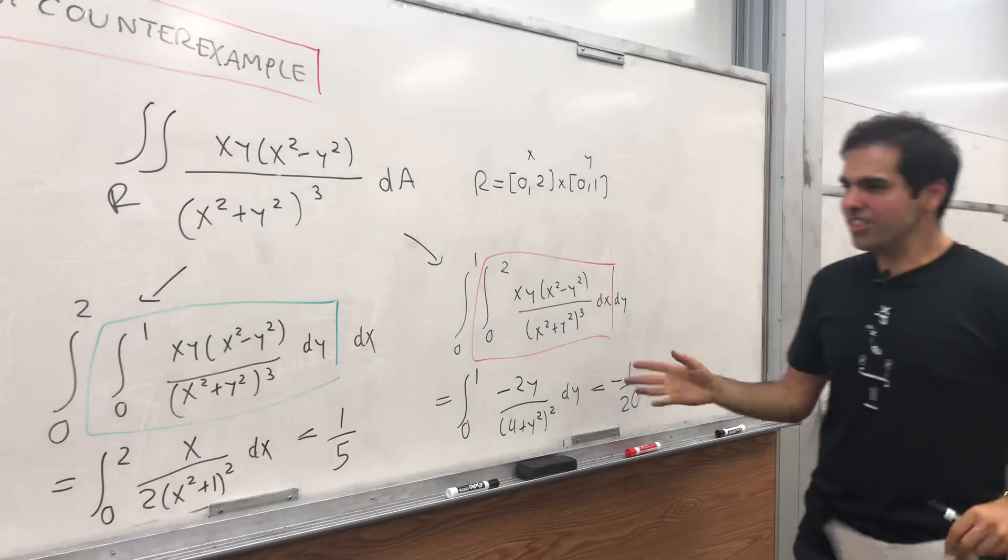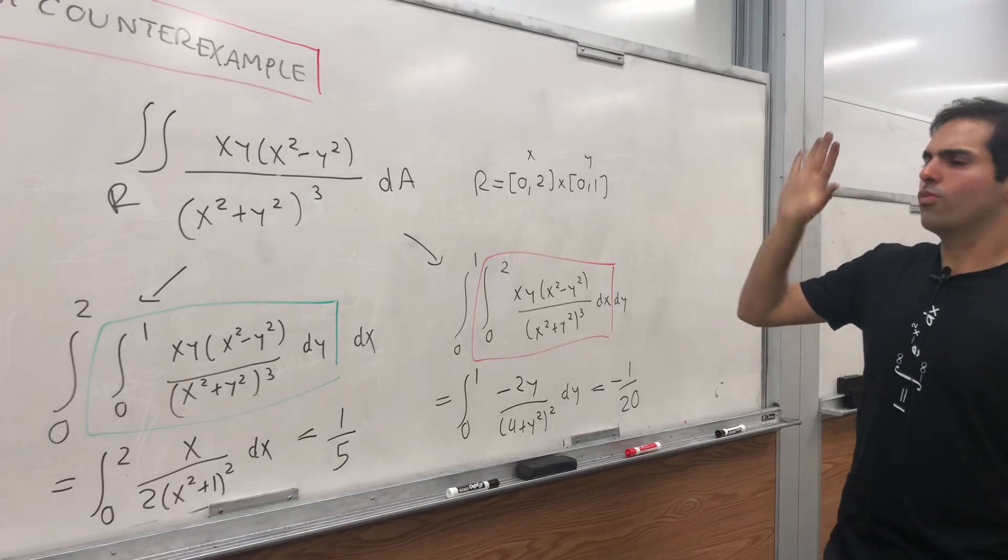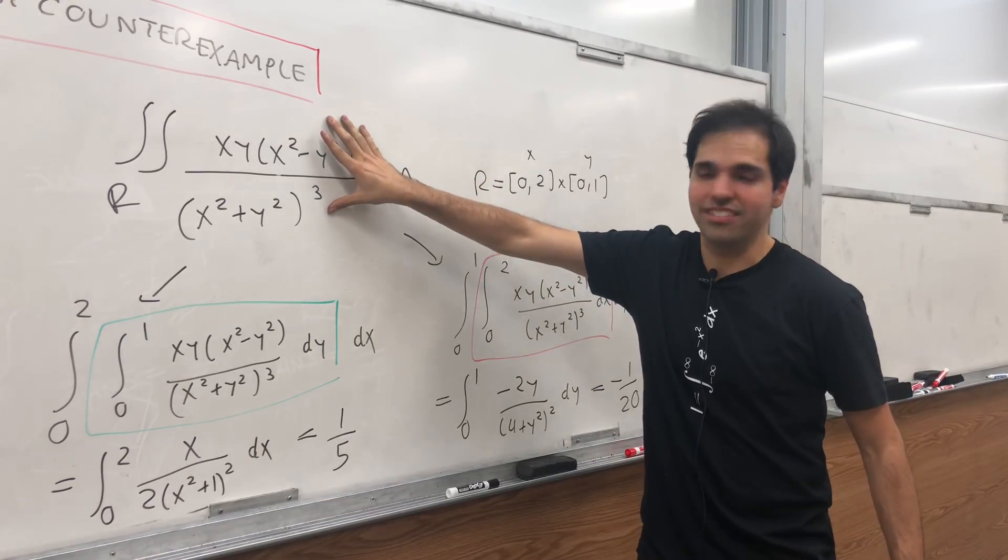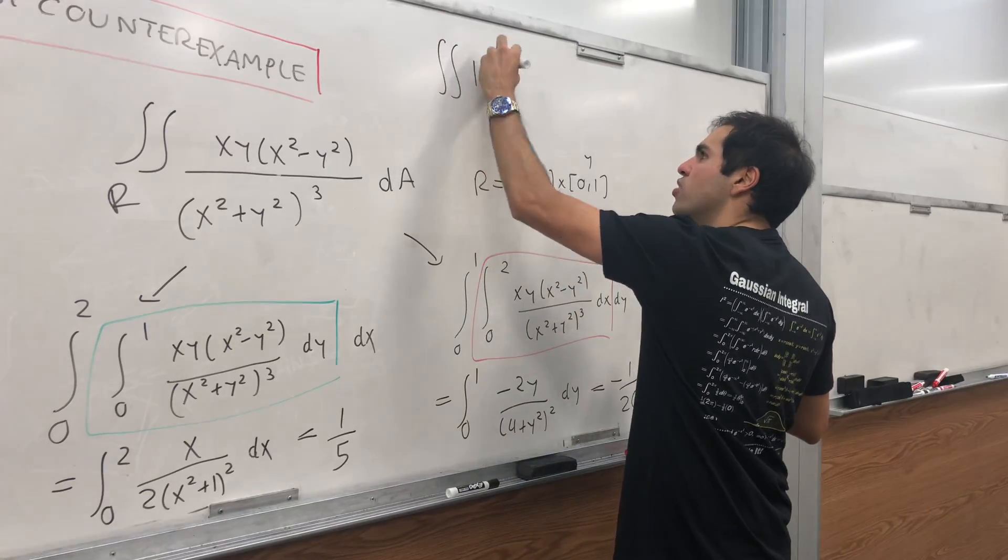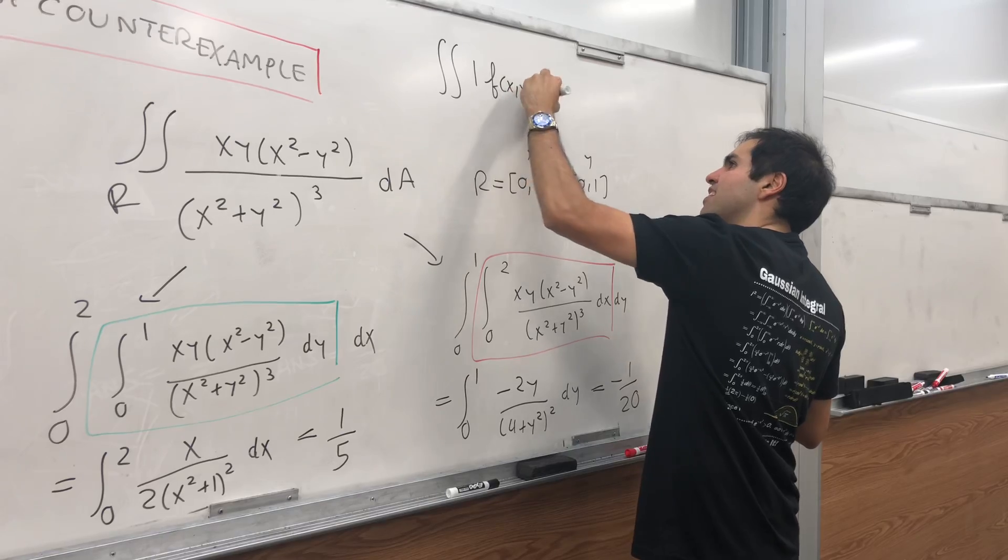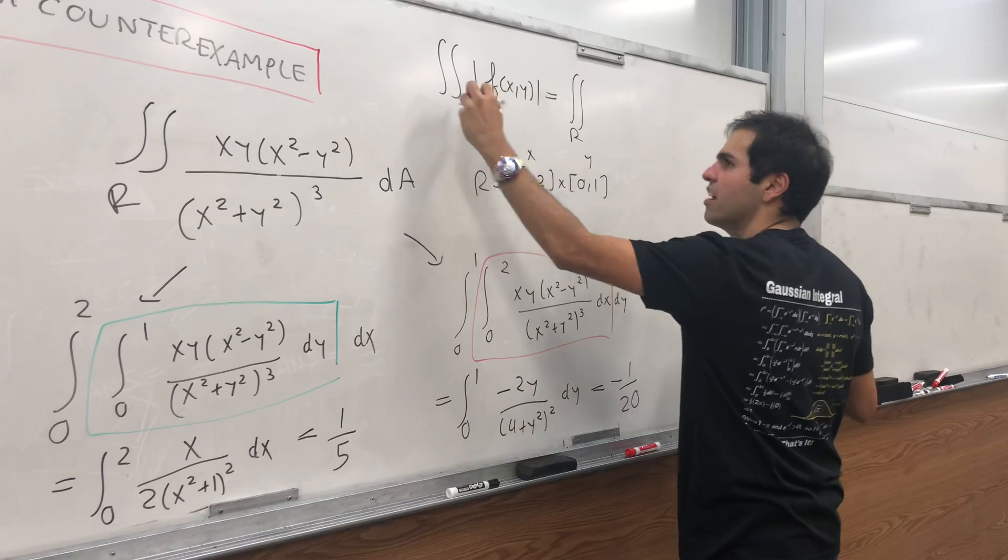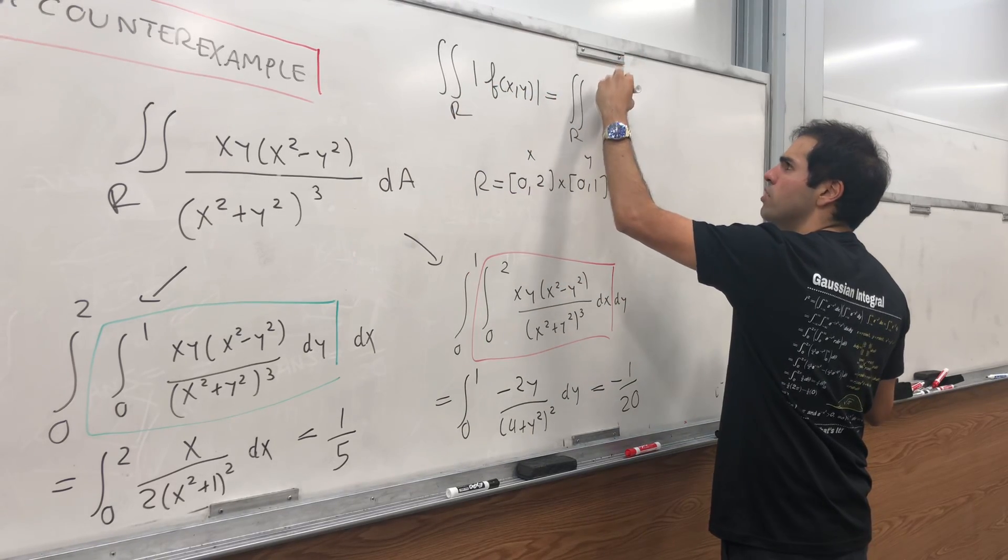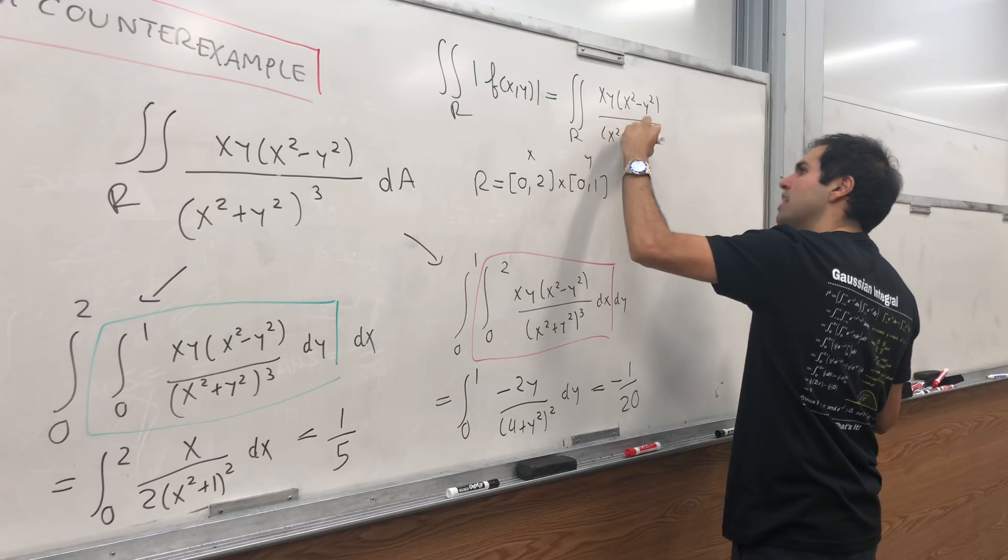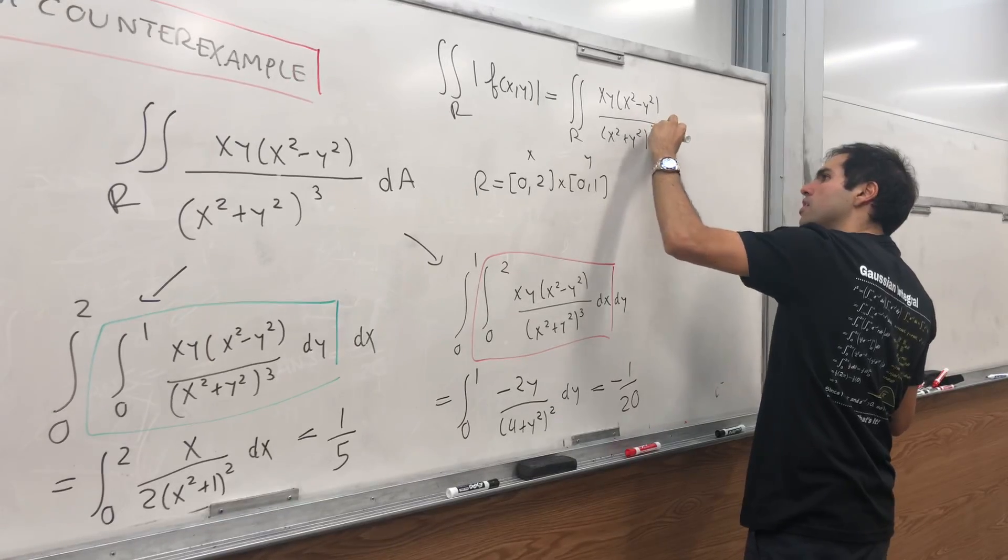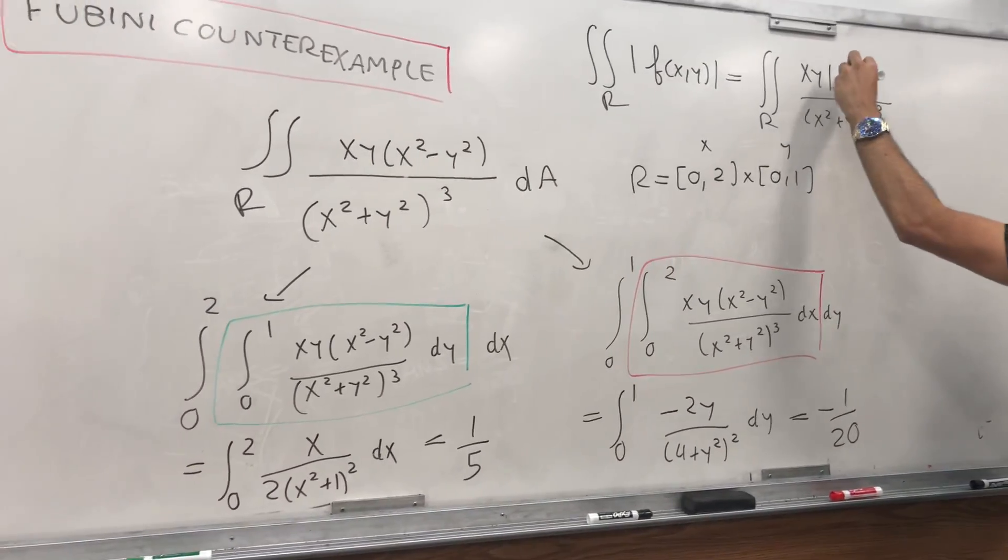Well, the interesting thing is each slice here is integrable, but what went wrong is that the function itself is not integrable. Because if you actually calculate the double integral of the absolute value of f(x,y) over the rectangle, it turns out this thing is actually infinity.